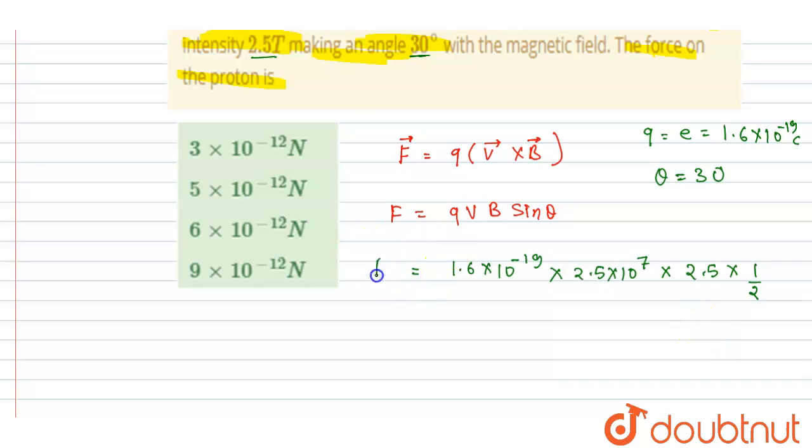Now this is the value of F, and if you solve this, this will get cancelled out by 0.8, and 2.2 into 2.2 it will be 6, 6.25 into 8 it will be 5, into 0.8 it will be 5, and 10 to the power minus 19 plus 7 it will be minus 12.